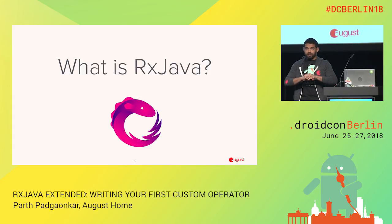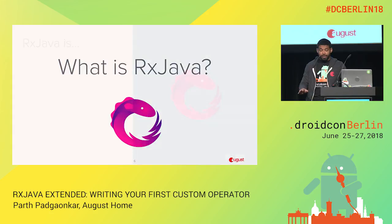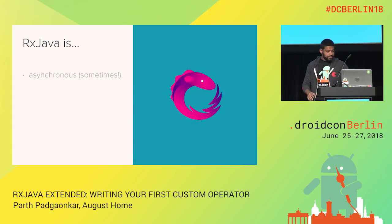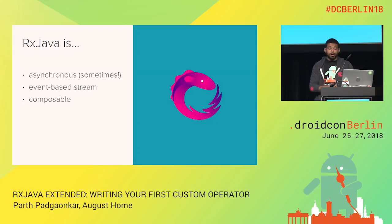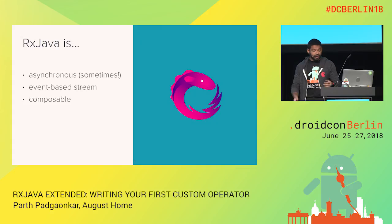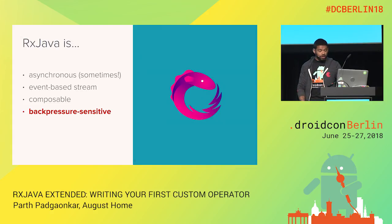We'll do a quick overview of RxJava. I don't think there's anything here that's going to blow your minds if you already know it. Mostly this is going to be a discussion about backpressure. RxJava is asynchronous if you want it to be. It's an event-based stream, meaning you get events for subscription, completion, and error. It's composable — you can do functional composition, f of g of x. And finally, it's backpressure-sensitive, which is arguably some of the most powerful features, but maybe not something that applies to a lot of Android developers.